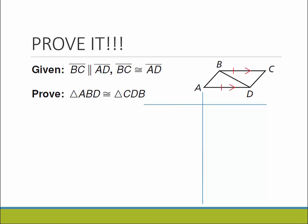So let's prove one. It tells us that BC is parallel to AD and that BC and AD are congruent. We have our statements, our reasons, and we need to prove that triangle ABD is congruent to triangle CBD. So let's write down what we're given.